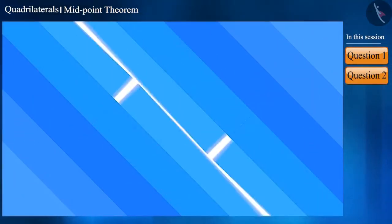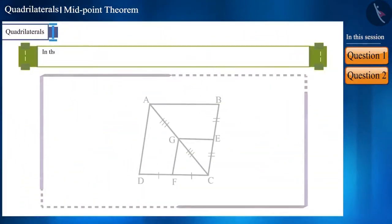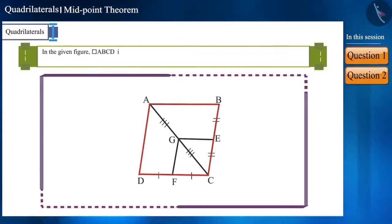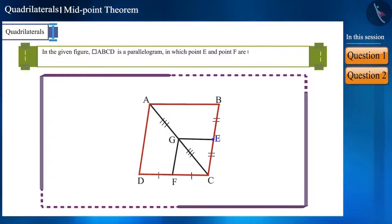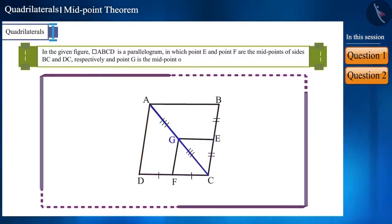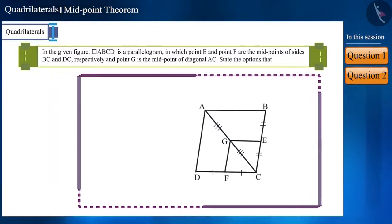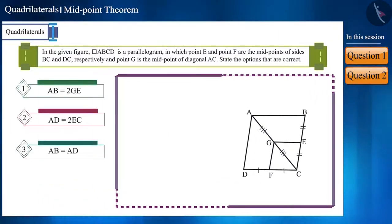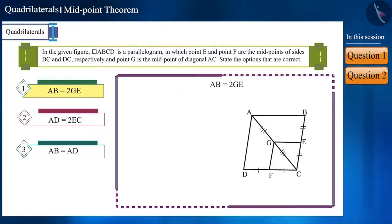Let's look at one more question. In the given figure, quadrilateral ABCD is a parallelogram in which point E and point F are the midpoints of sides BC and DC respectively, and point G is the midpoint of diagonal AC. Based on the given information, we need to state which options are correct. Let's check the first option.